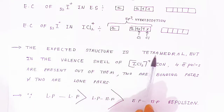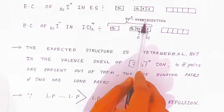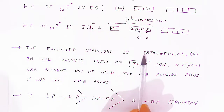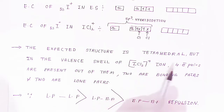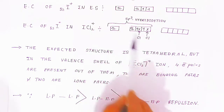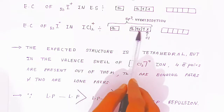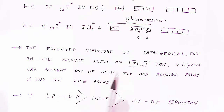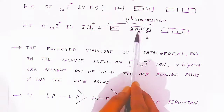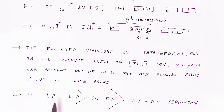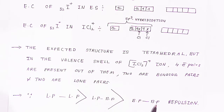The expected structure is tetrahedral due to sp³ hybridization. But in the valence shell of ICl₂⁺ cations, 4 electron pairs are present — 2 are bonding pairs and 2 are lone pairs. Because lone pair–lone pair repulsion is greater than lone pair–bond pair repulsion, which is greater than bond pair–bond pair repulsion.